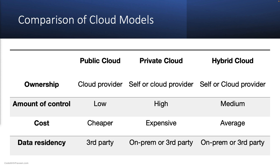Finally, multi-cloud models offer the most flexibility, allowing organizations to use different cloud providers for specific services or applications. For instance, an organization might use AWS for its machine learning services and Azure for its database services. However, managing multiple cloud providers can be complex, requiring significant IT resources to ensure the data is secure and applications are correctly integrated.